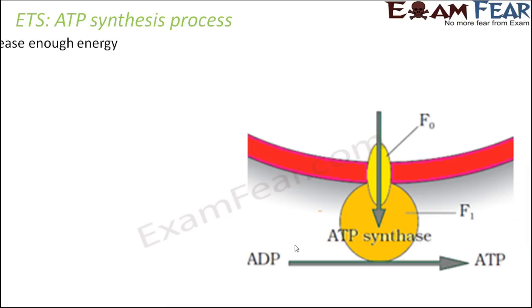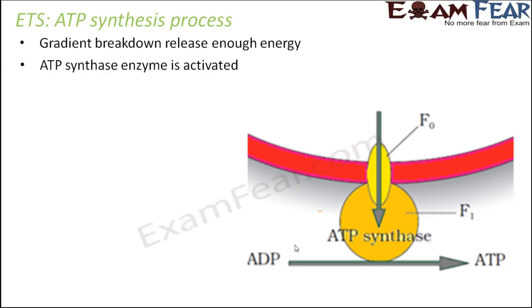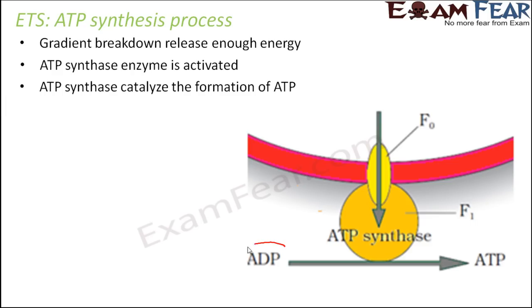Gradient breakdown releases enough energy, the ATP synthase enzyme is activated, and ATP synthase catalyzes the formation of ATP. ADP takes one inorganic phosphate and adds it on to form ATP. That is how ATP formation takes place.